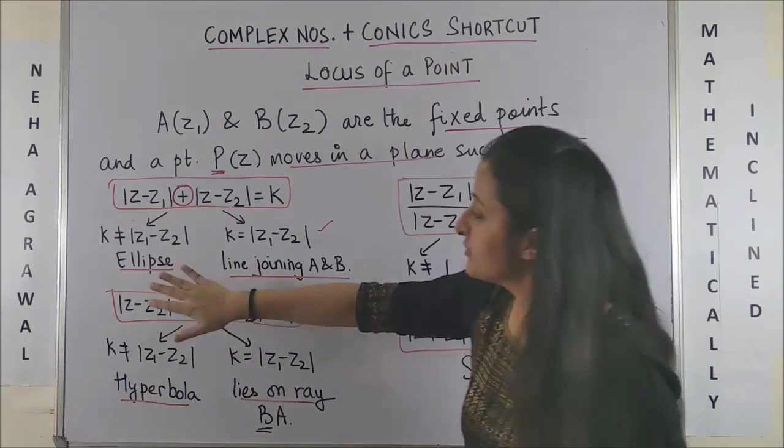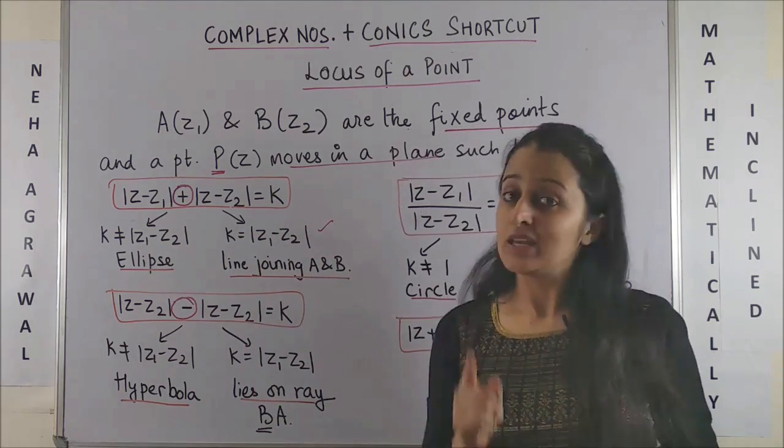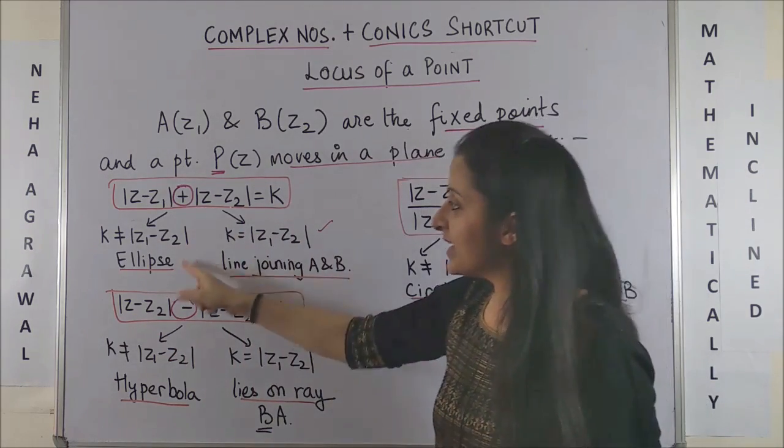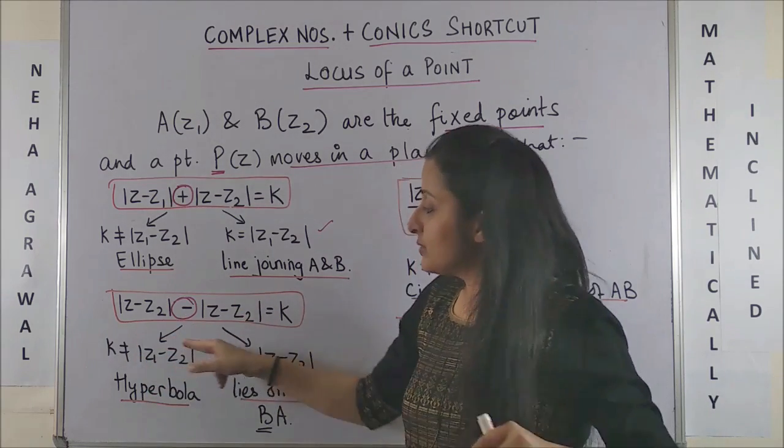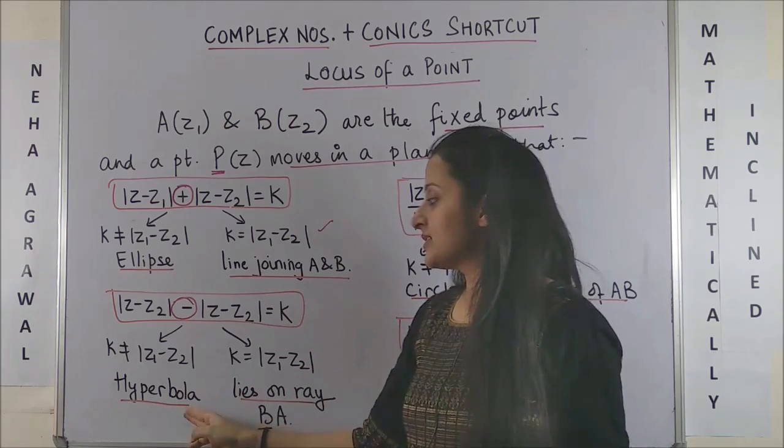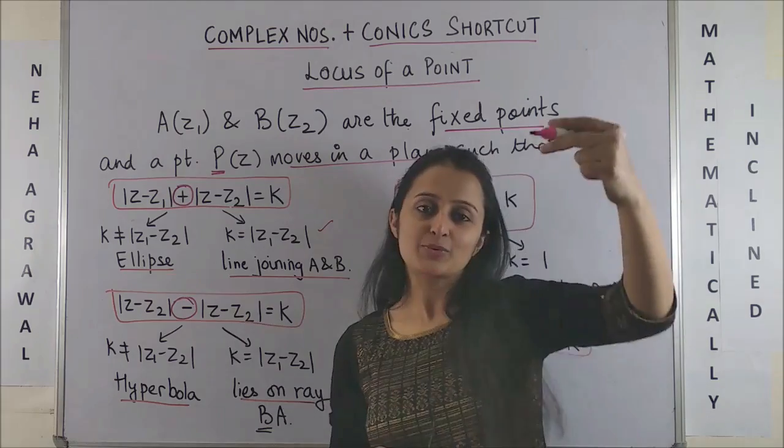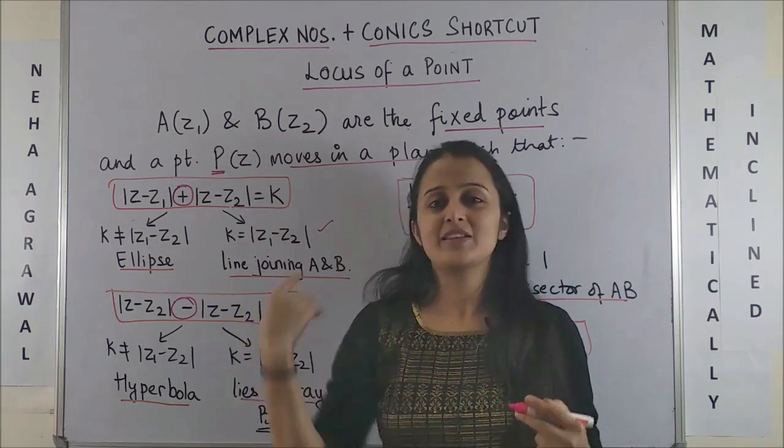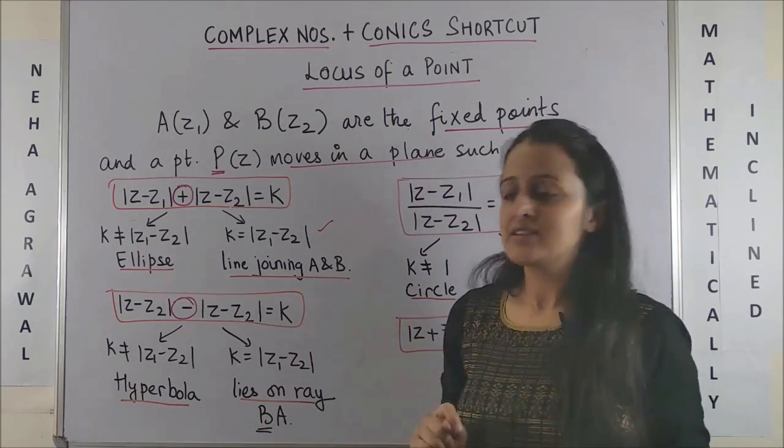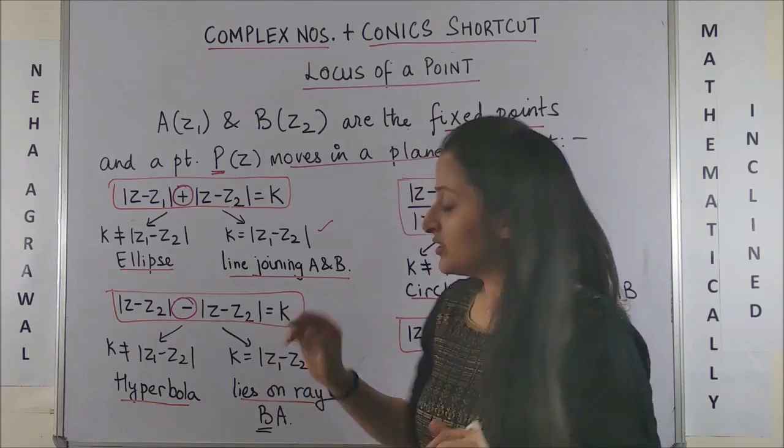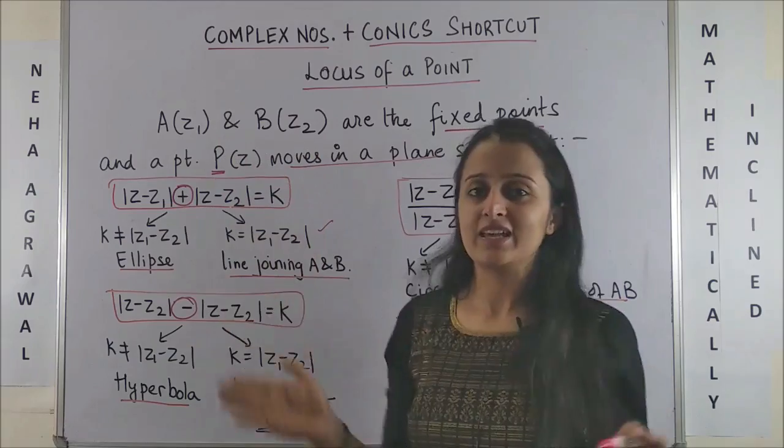Likewise, in the next equation, very similar, but in place of plus you have a minus sign in between. Then in that case, again the same logic. If K is not equal to |z₁-z₂|, then it's simply a hyperbola, very similar to your equation of hyperbola which was x²/a² - y²/b² = 1. And in case your K is equal to |z₁-z₂|, then this P lies on the ray BA. BA means beginning from B and moving towards A.